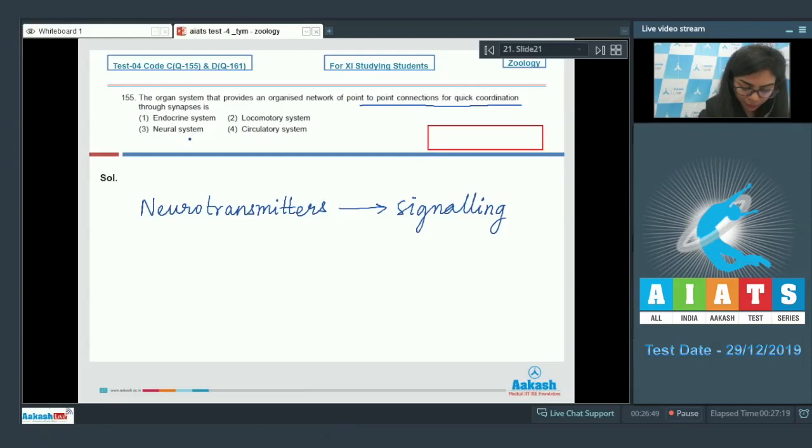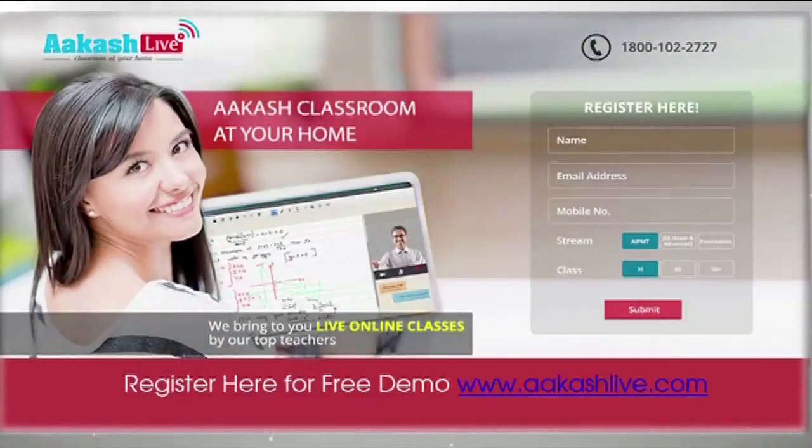Neurotransmitters are a part of neural system, so the right answer here would be neural system. Whereas endocrine system requires hormones to provide chemical integration, and circulatory system and locomotory systems - locomotory system helps in locomotion and circulatory system helps in transport of gases and nutrients. So the right answer here would be option number three, neural system.